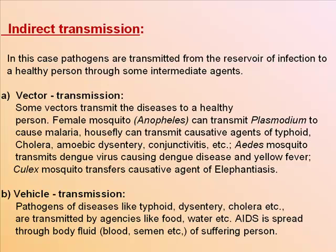Indirect transmission: pathogens are transmitted from a reservoir of infection to a healthy person through some intermediate agent. Vector transmission: some vectors transmit the disease to a healthy person. Female Anopheles mosquito can transmit Plasmodium to cause malaria. House fly can transmit causative agents of typhoid, cholera, amoebic dysentery, and conjunctivitis. Aedes mosquito transmits dengue virus causing dengue and yellow fever. Culex mosquito transmits the causative agent of elephantiasis.